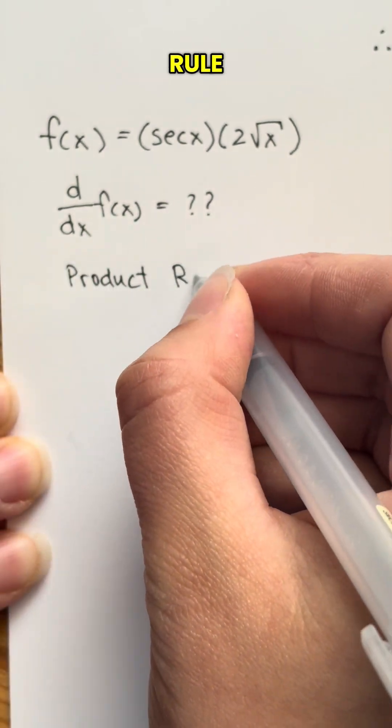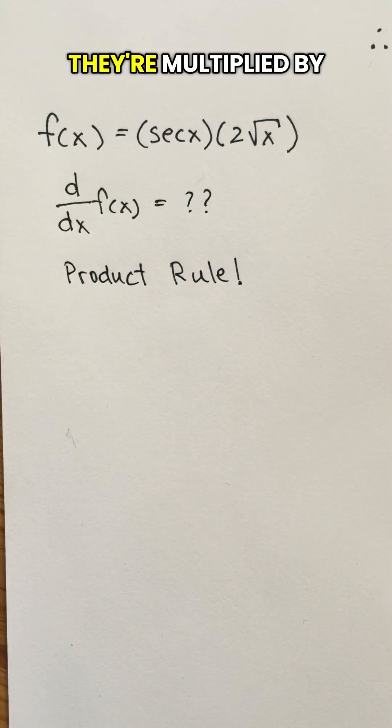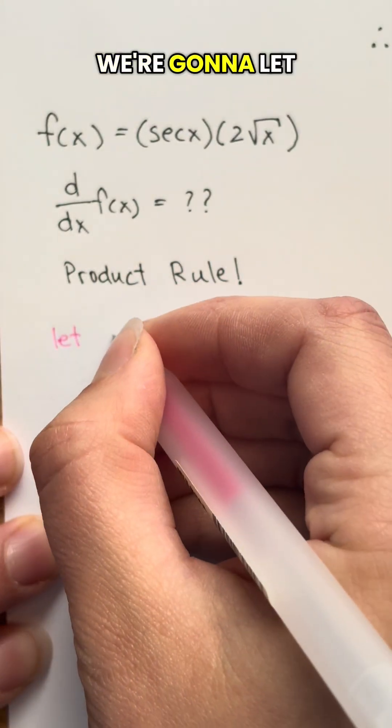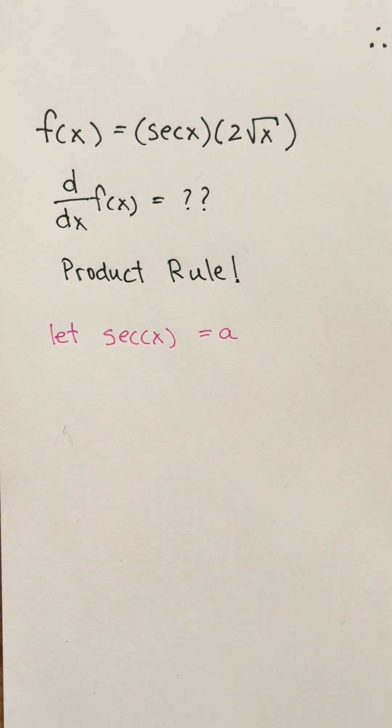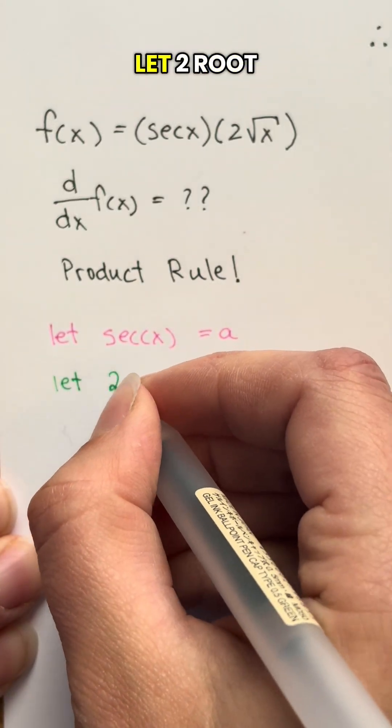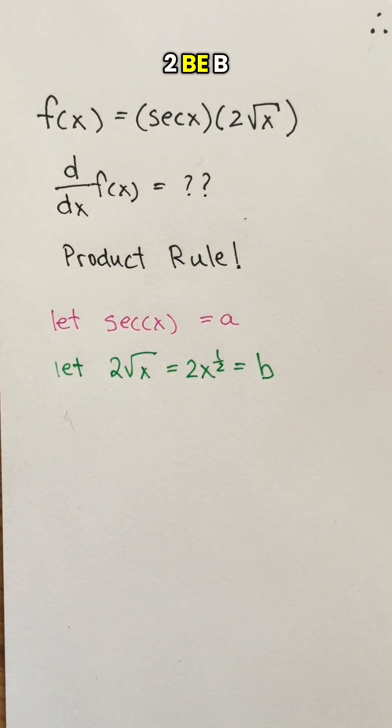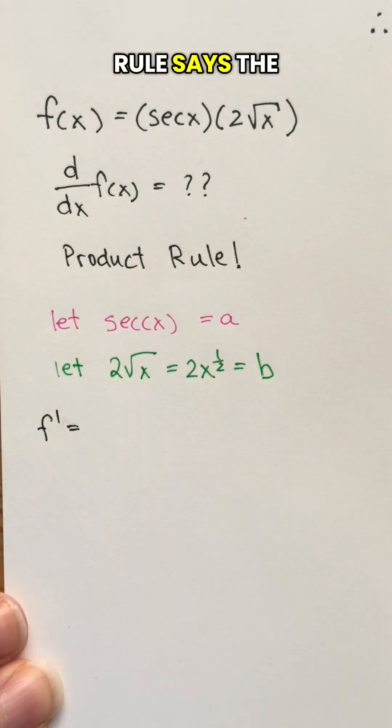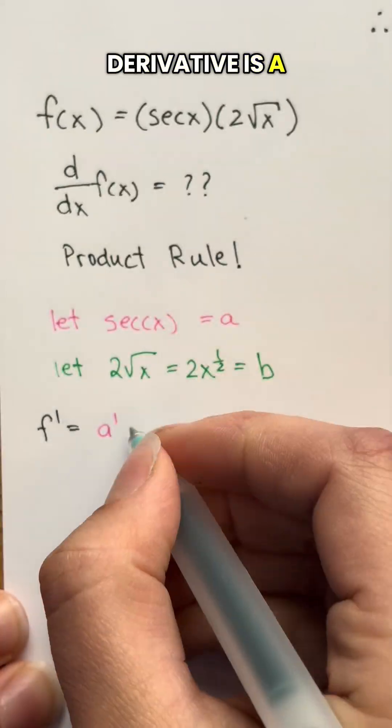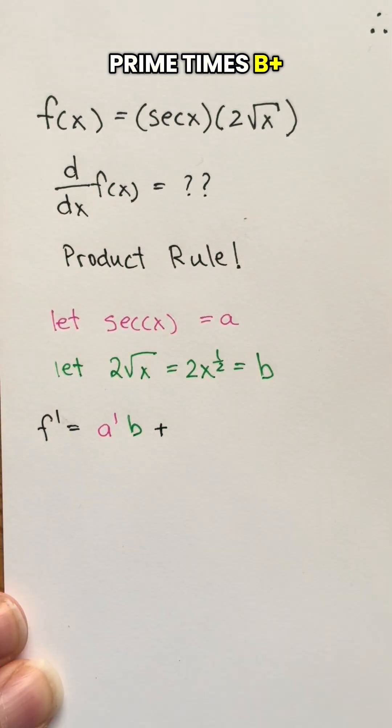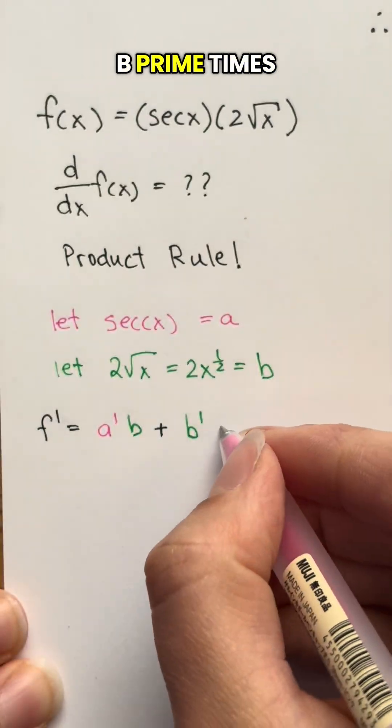Here we can use the product rule because we have two functions multiplied by each other. We're going to let secant x equal to a, then we're going to let 2 root x equal to 2 times x to 1 over 2 be b. So the product rule says the derivative is a prime times b plus b prime times a.